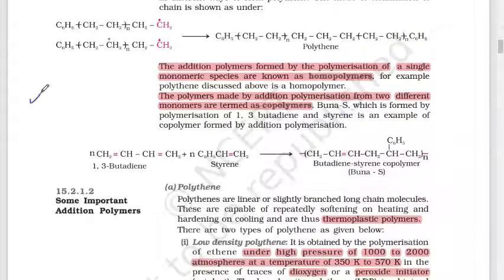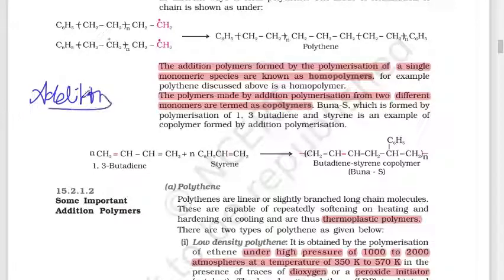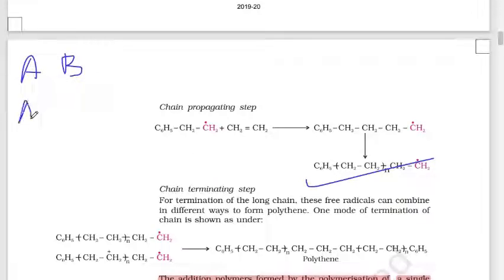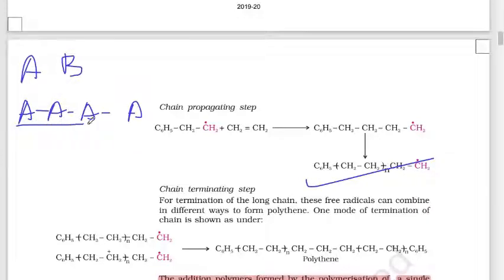Addition polymers are classified into two types: homopolymers and copolymers. If a polymer is made up entirely of A monomers — like A, A, A — it is called a homopolymer, because it consists of the same single monomer unit.